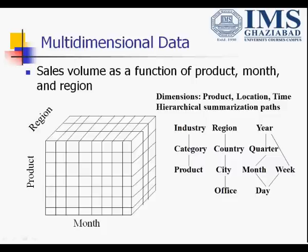Let's take an example of multidimensional data. We can say it is a 3D type of data where we can store product in one dimension, month in another dimension, and region in the third dimension. This is the simple structure of multidimensional data.